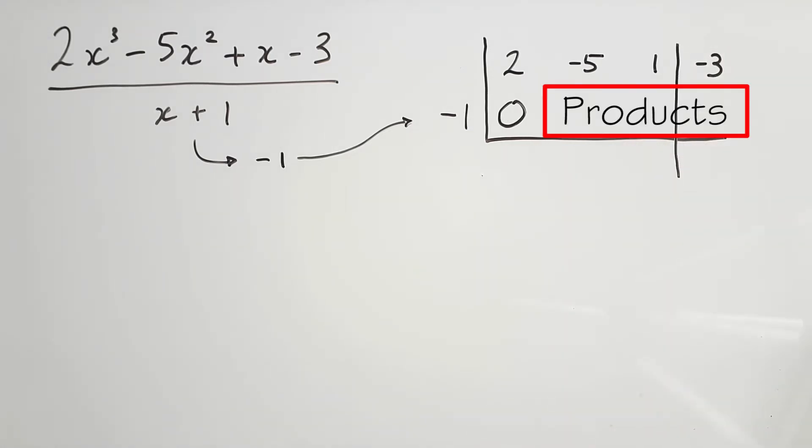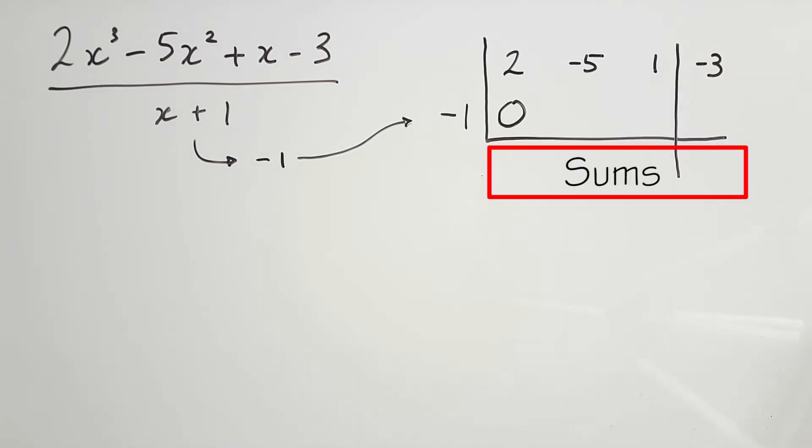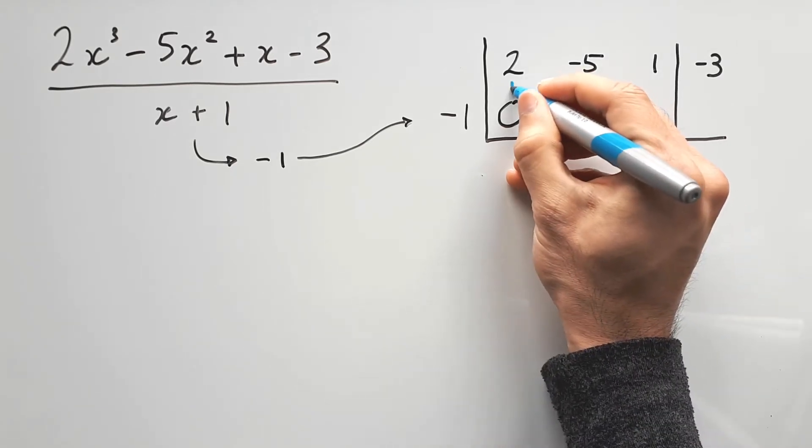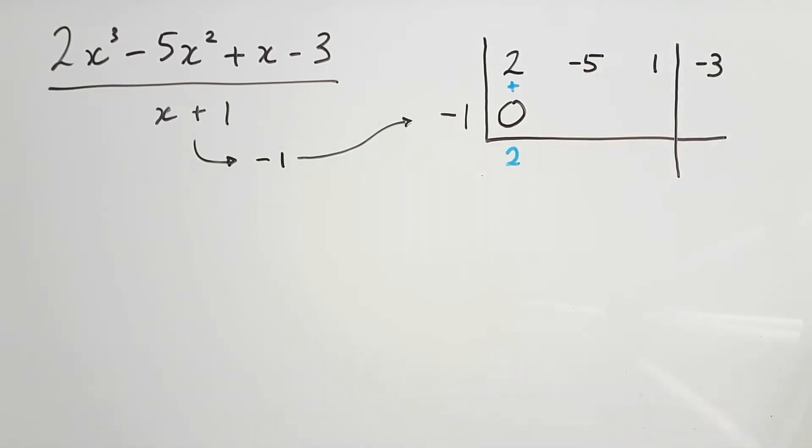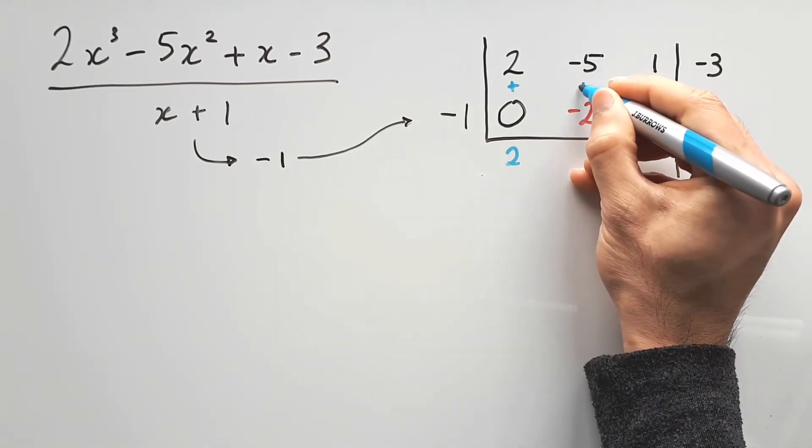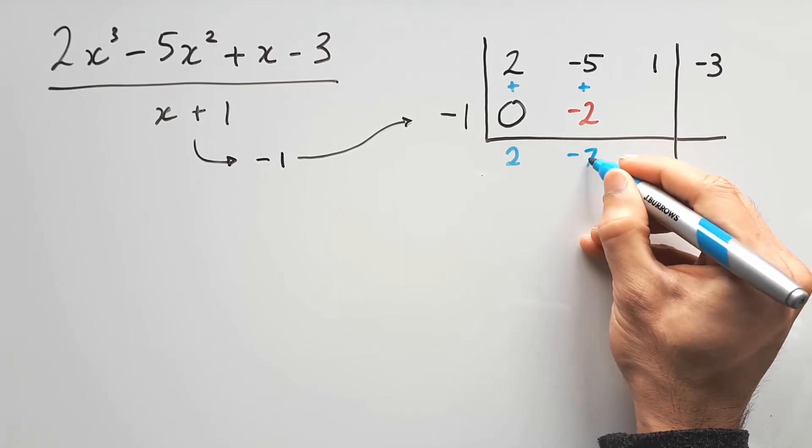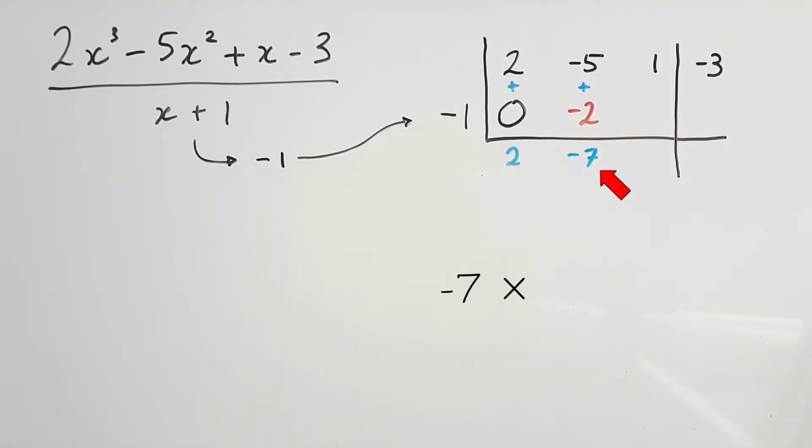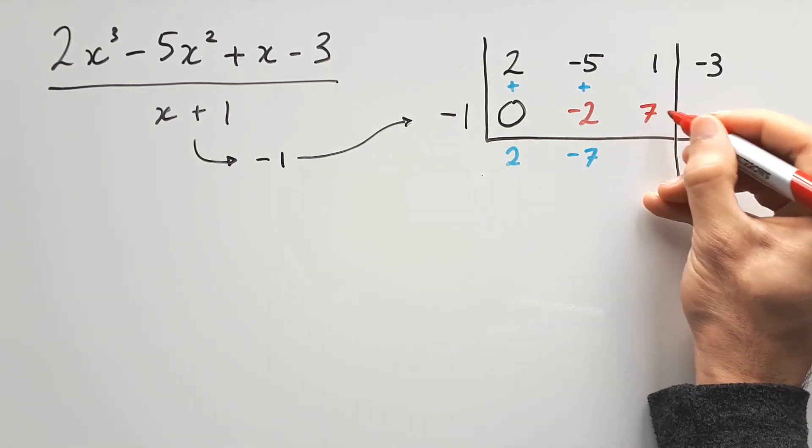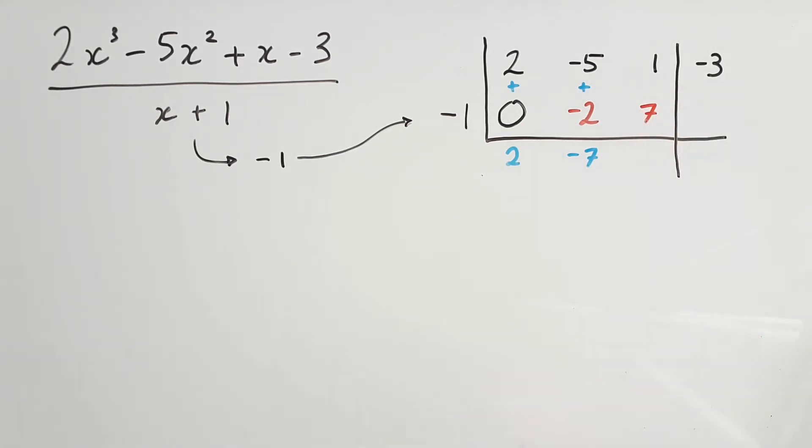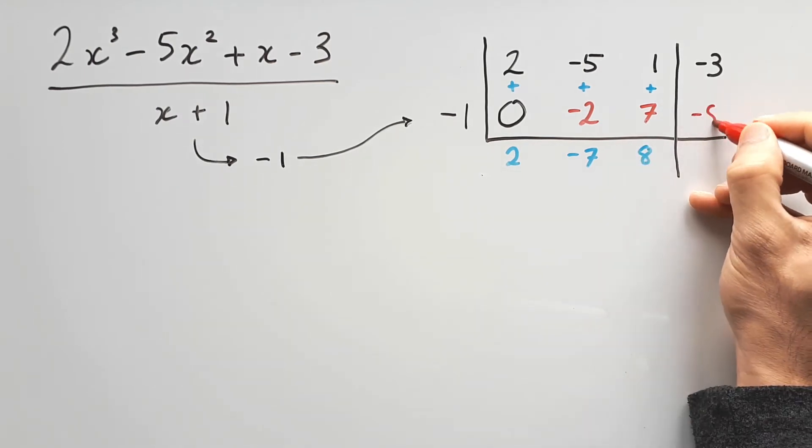The second row will have products, while the third row will have sums. Starting from the left, add 2 with 0, and write the sum below. Next, times this sum with negative 1, and place the product inside. Now add negative 5 with negative 2, writing the sum below. Then multiply negative 7 with negative 1 again. That product goes to the next available spot in the second row. Repeat this alternating process, until you reach the end.